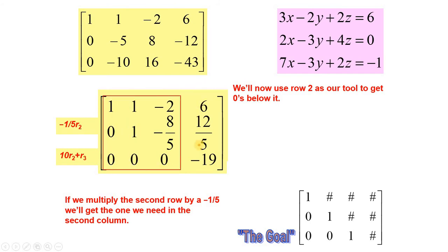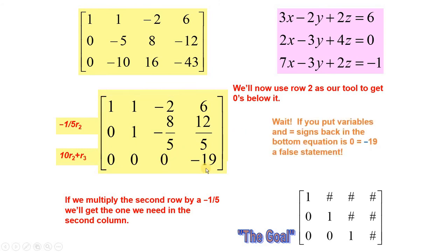The rank of the coefficient matrix M is equal to 2, and the rank of the augmented matrix [A|b] is equal to 3. Since rank of M is less than rank of [A|b], the system is inconsistent — it has no solution. The statement 0z equal to minus 19, giving 0 equal to minus 19, is a false statement, confirming the system is inconsistent, meaning the system has no solution.